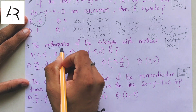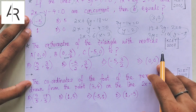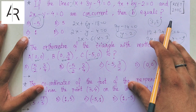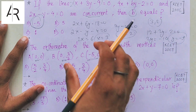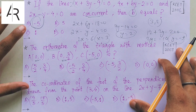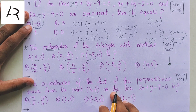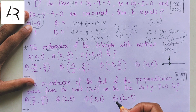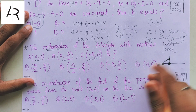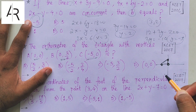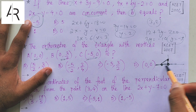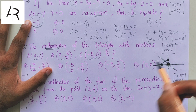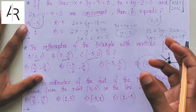Coming to the next question: find the orthocenter of the triangle with vertices (0, 0), (0, 3/2), and (−5, 0). Again you can solve this using the actual method by finding slopes and perpendiculars, but there is a trick method called the diagram approach. We draw the diagram: (0,0) is this point, (0, 3/2) is here, and (−5, 0) is here. We complete the rough triangle. As you can see from the diagram, you draw perpendiculars to all the vertices and from the diagram itself the orthocenter is clearly (0, 0).